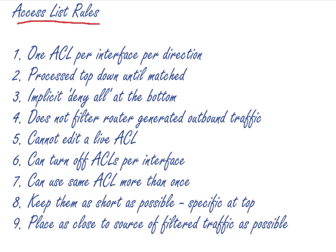Number three: there's an implicit deny all at the bottom of every access list. Number four: access lists do not filter traffic generated from your router - so outbound traffic leaving your router if it's generated from itself. Number five: you can't edit a live access list - I'll give you more detail about that and the exceptions later. Six: you can turn off an access list per interface. Number seven: you can use the same access list more than once - you can apply it to lots of different places, interfaces, and ports. Number eight is a rule of the road: keep them as short as possible.